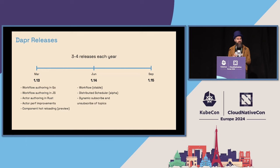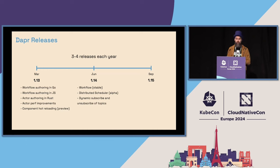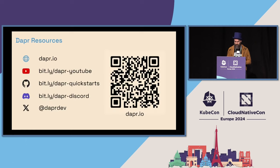The next release will be version 1.14, probably somewhere in June. The aim is to have workflows as a stable API, and a new feature will be the distributed scheduler — so you can schedule calls for scheduled publishing, and dynamic subscribe and unsubscribe from topics.